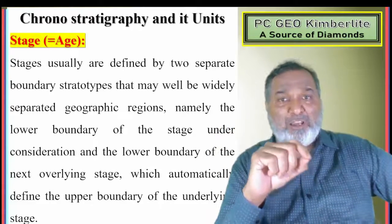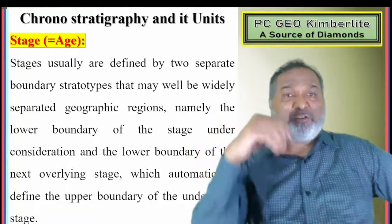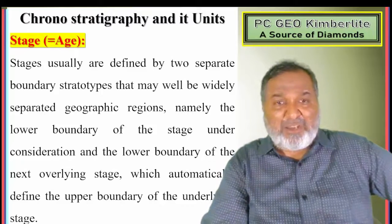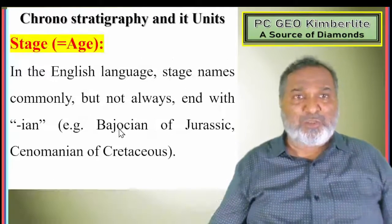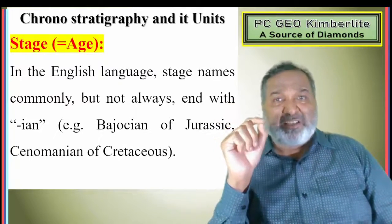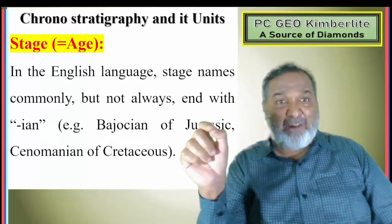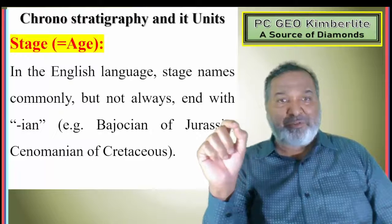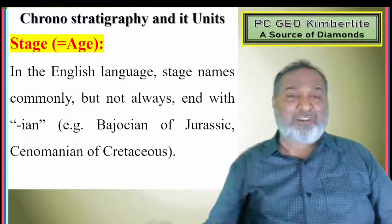Stages are usually defined by two separate boundary stratotype types that may be widely separated geographically — namely the lower boundary of the stage and the lower boundary of the next overlying stage, which automatically defines the upper boundary. In the English language, stage names commonly but not always end with '-ian', for example Bajocian of the Jurassic or Cenomanian of the Cretaceous.